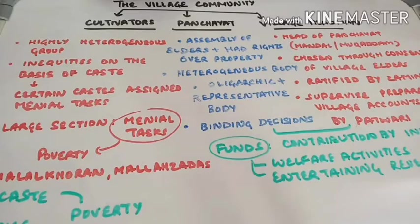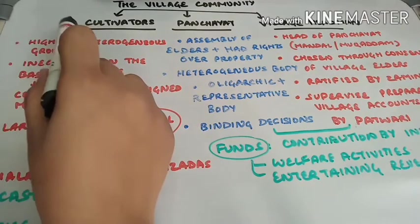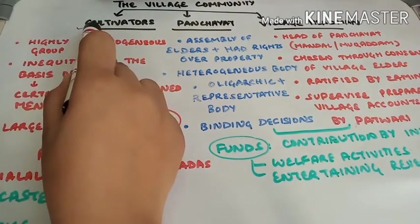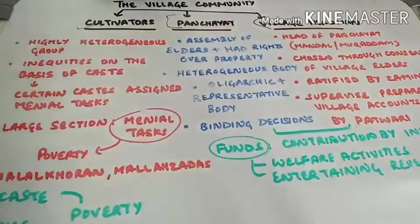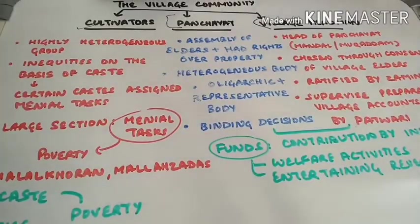Hello everyone, this is part 2 of history chapter 8 and the topic which we have to start with is the village community. There are three components of the village community: the first is cultivators, then we have the panchayat, and then we have the village headman. So let's discuss these three one by one.